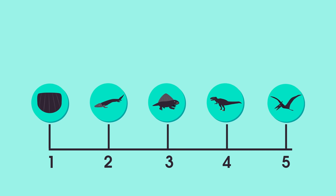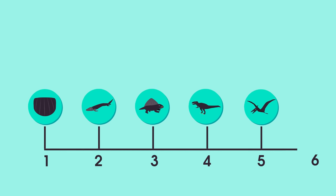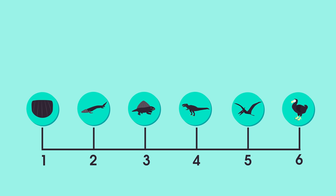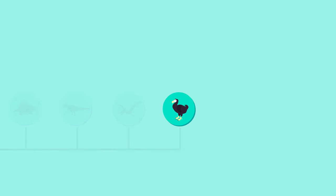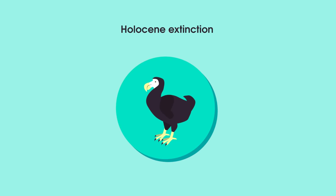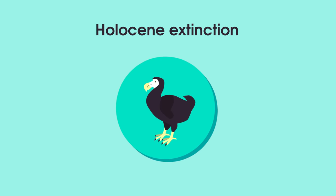Biodiversity has declined in the past, and a total of five major extinction events have occurred. Currently, we are in the planet's sixth major extinction event, known as the Holocene extinction.